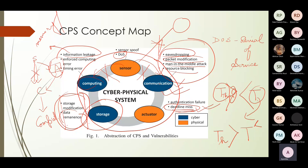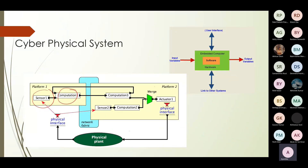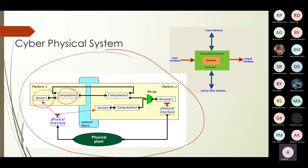If you remember the basic CPS diagram — sensor, communication, computation, actuator — and you remember the components, you can think in detail about what attacks are possible on each component. This gives you the whole view of what types of CPS security issues are possible in the literature.